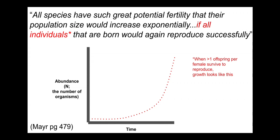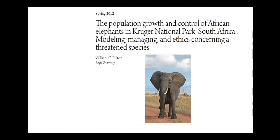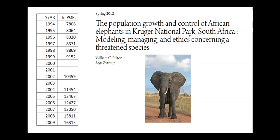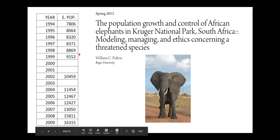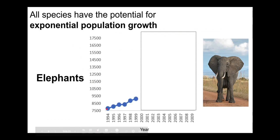Darwin didn't study elephants directly, but he did some research and theoretical calculations on how quickly elephant populations would grow. We now have good data: an example from Kruger National Park, where elephants are protected from poachers and heavily managed. Looking at the raw data, in 1994 there were almost 8,000 elephants, and they doubled by 2009. Plotting this data, you can see they increase steadily from 1994 to 1999 as they have babies.